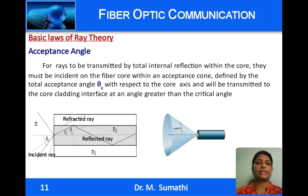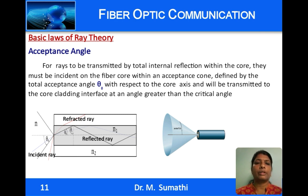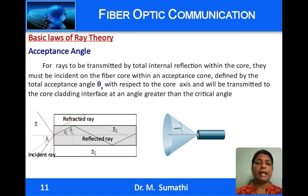Moving to the concept of acceptance angle: in a fiber, light propagates by total internal reflection when the angle of incidence is greater than the critical angle. Considering the core with refractive index n1 greater than that of the cladding n2, when light is coupled into an optical fiber at the air-core interface, it has to make an angle less than θ₀, the acceptance angle, with respect to the axis of the fiber, so that it makes an angle greater than the critical angle at the core-cladding interface inside the fiber.